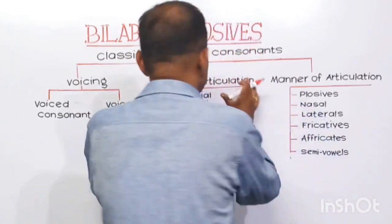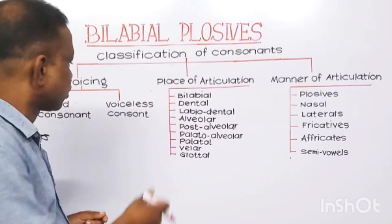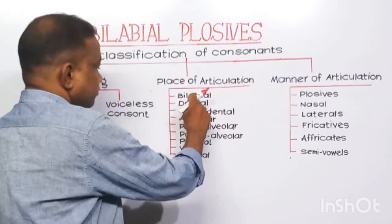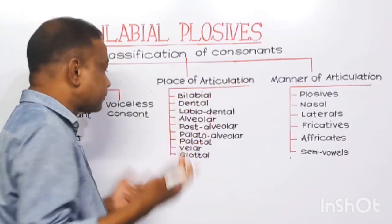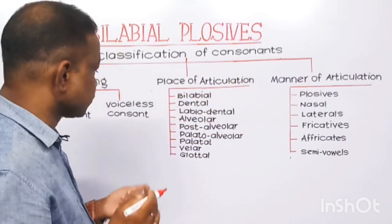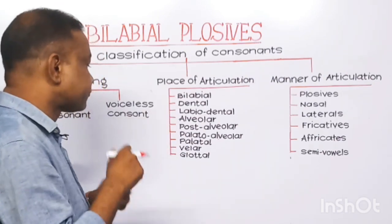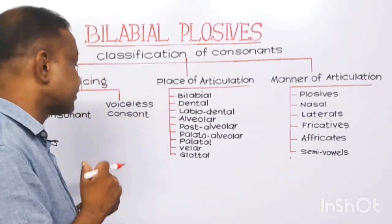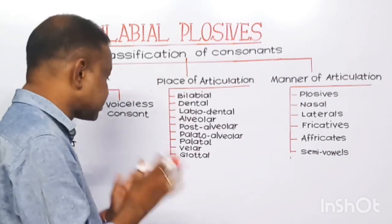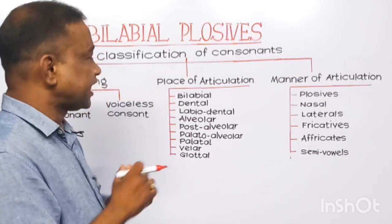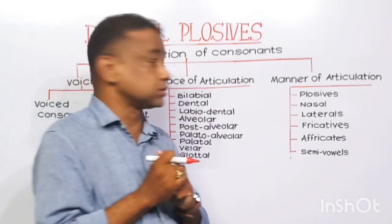According to the place of articulation, consonants are of nine types. They are bilabial, dental, labiodental, alveolar, post-alveolar, palato-alveolar, palatal, velar, and glottal.